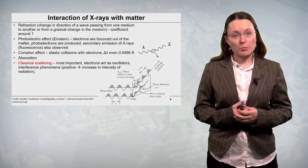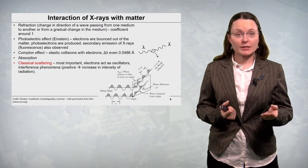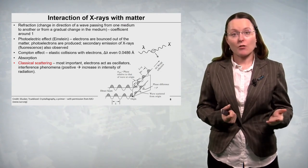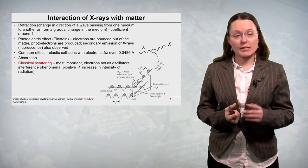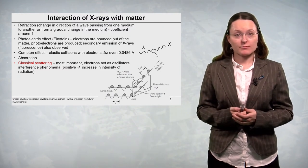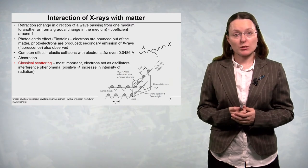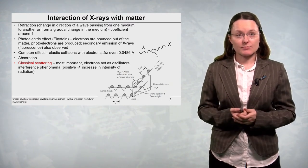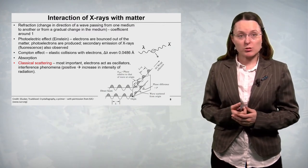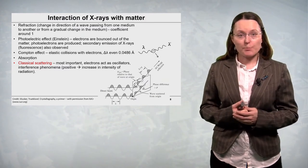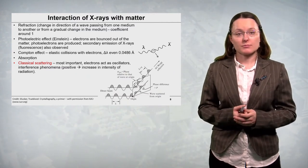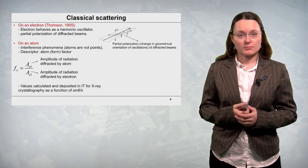We also have Compton effect. In Compton effect there are elastic collisions of X-rays with electrons and the wavelength of the X-rays changes even by 0.0486 angstroms. X-rays are also partly absorbed by matter. But the most important phenomenon here is the so-called classical scattering. In classical scattering electrons act as harmonic oscillators and there are also some interference phenomena. The positive interference leads to increase in intensity of X-rays and to the diffracted beams.